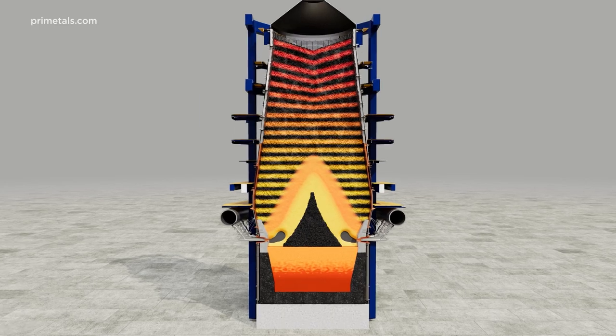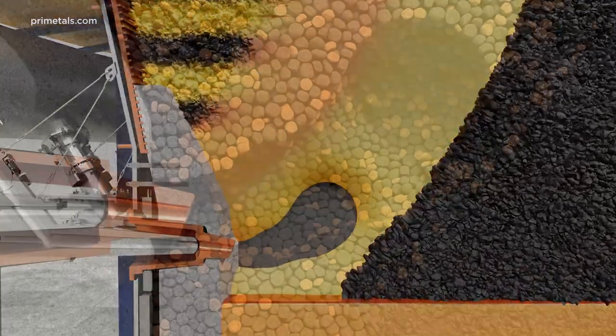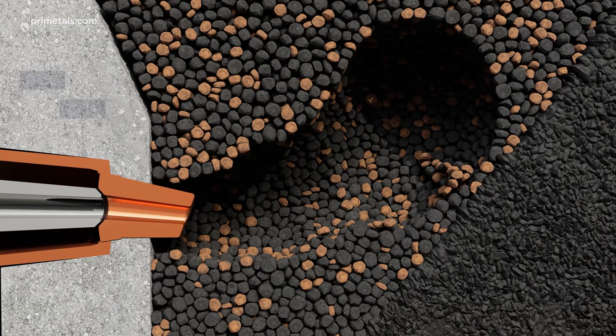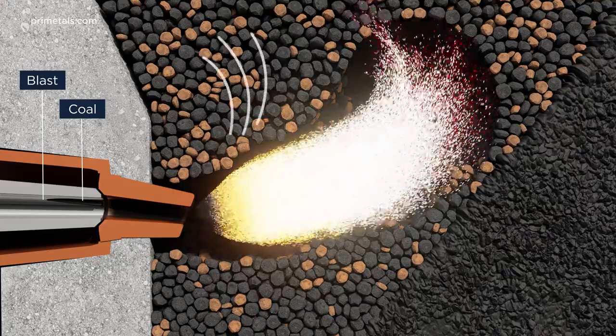When injecting pulverized coal, a major inhibitor of gas flow is the buildup of char deposits around the Tuir Raceway. These block access to the center of the furnace and deflect the reducing gases up and out towards the walls.